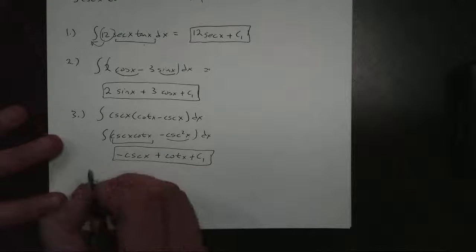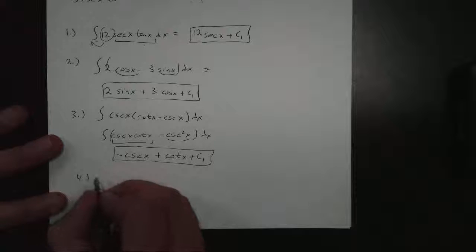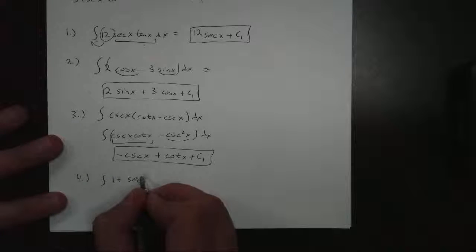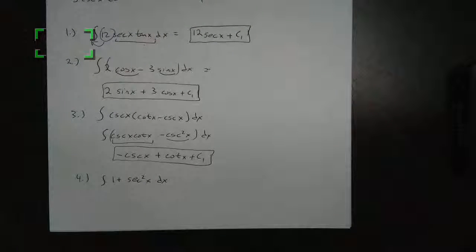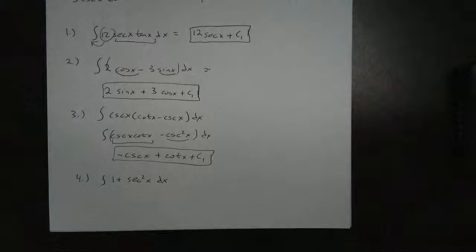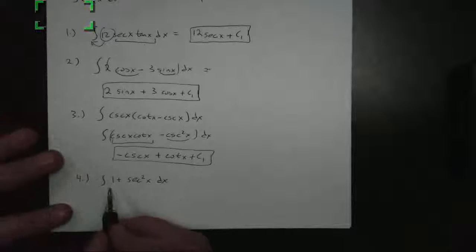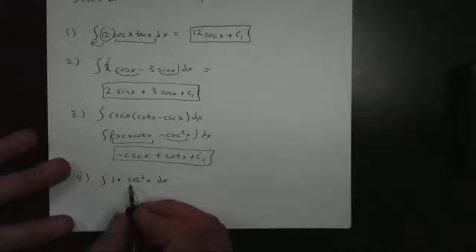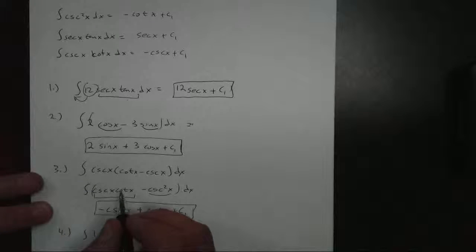Now, the last one, let's take a look here for a trig one, number four. What if I have something like one plus the secant squared of x dx? Let me turn on my light here real quick. There we go. And I probably have to refocus this too. So let's see here.